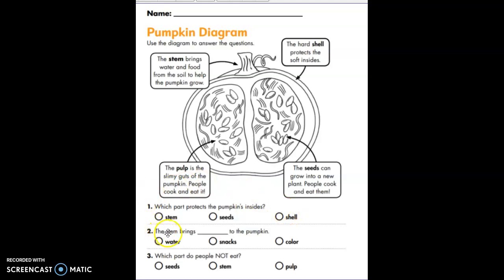The stem brings blank to the pumpkin. Water, snacks, or color? Which part do people not eat? Seeds, stem, or pulp?